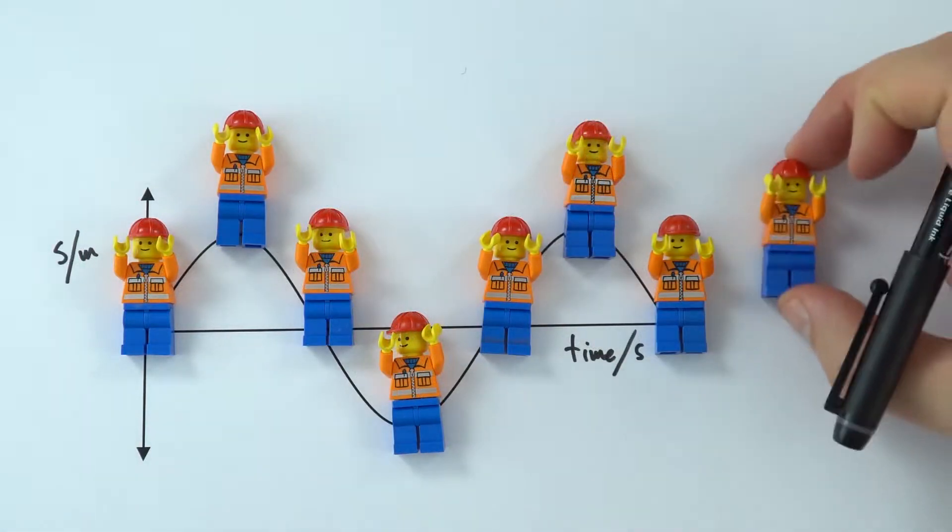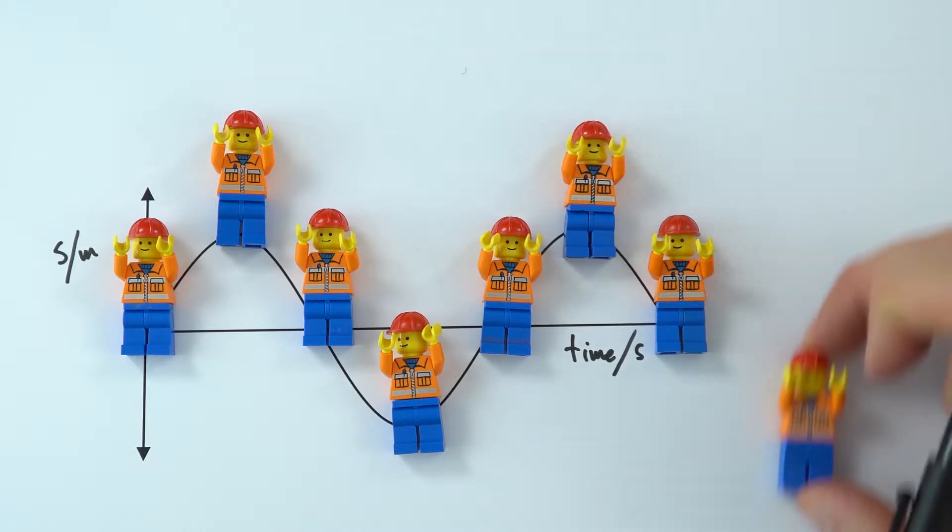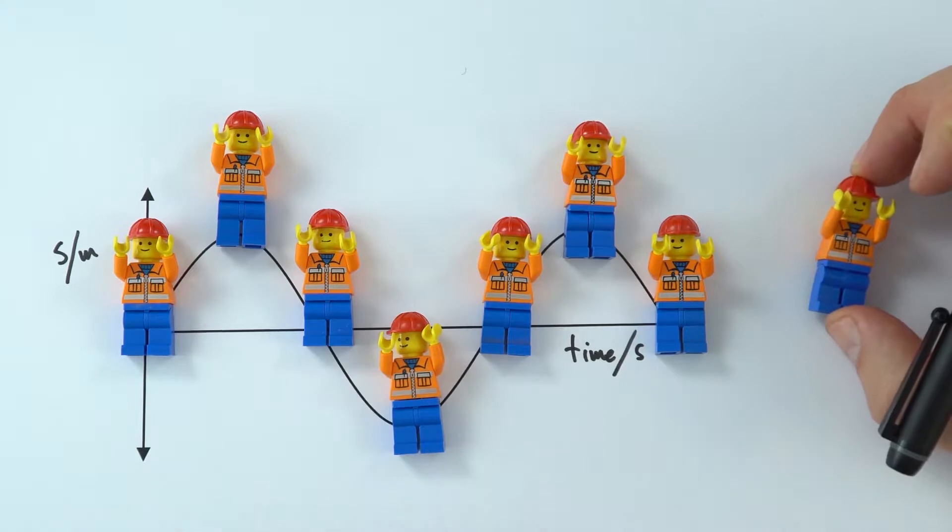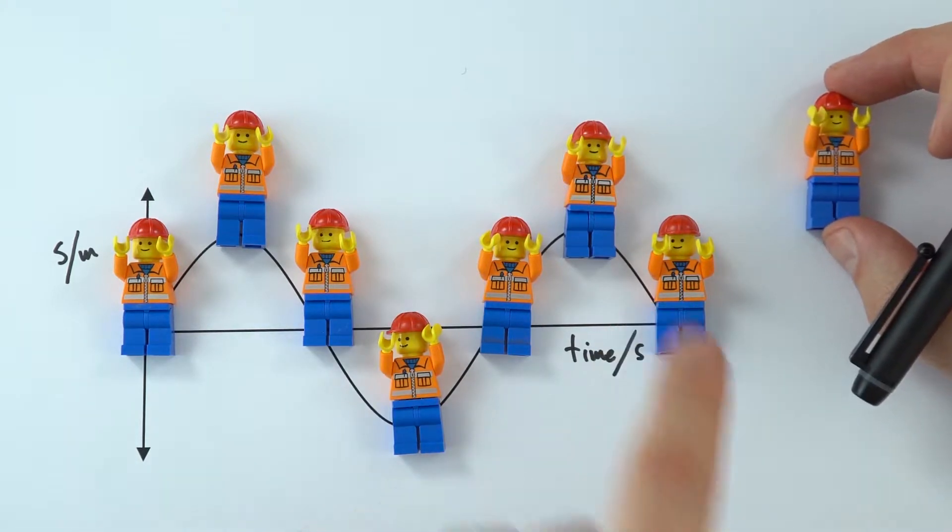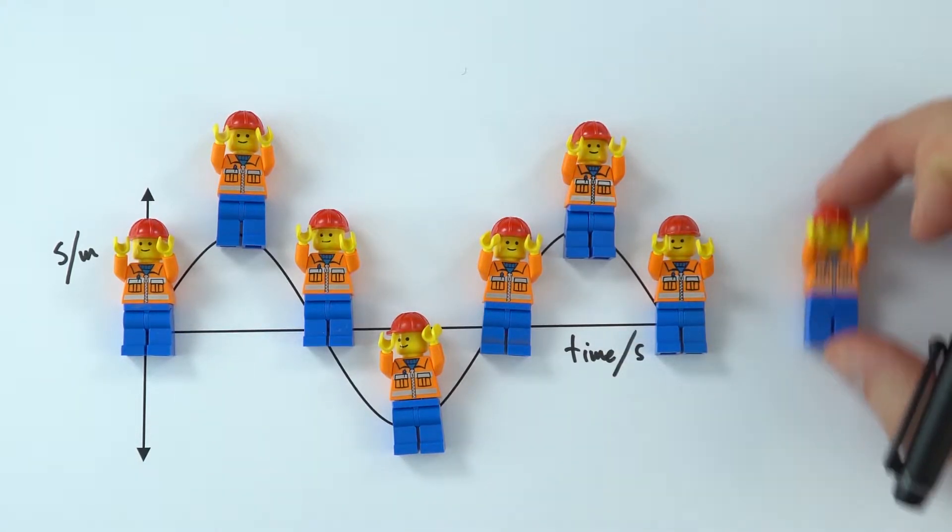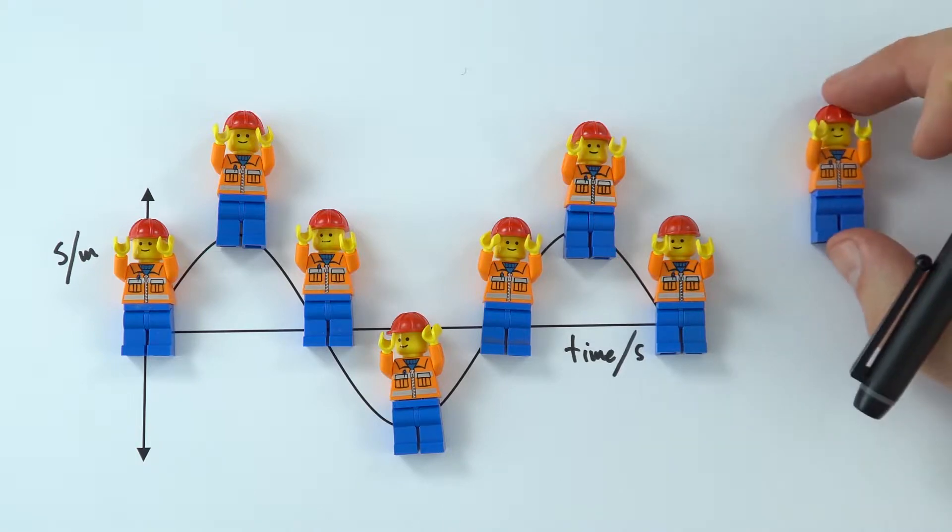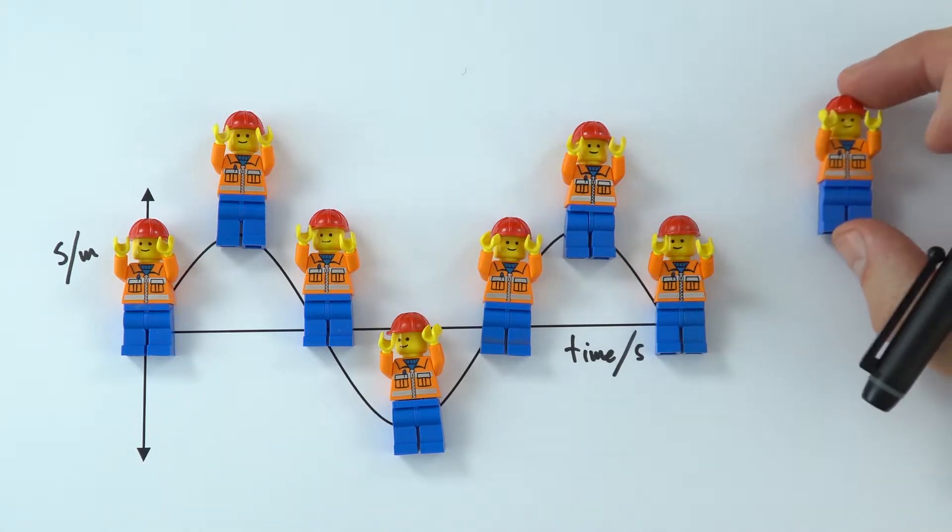So what this is really showing is how one particle moves up and down, and it just keeps going through this wave cycle. Now what we can tell from this graph then, is the time it takes them to maybe go from their peak position down to the bottom and back up to their peak position. Again, their time for one complete oscillation.